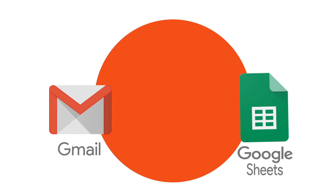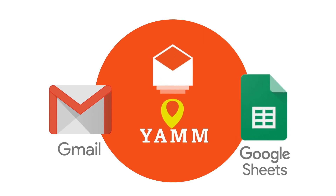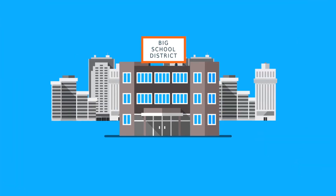All you need is to create a draft in Gmail and fill in a Google Sheet with your mailing list. YAM does the rest. Simple, right? Here's an example.